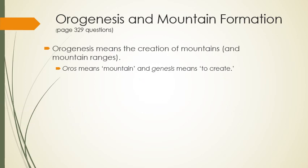So, Orogenesis and mountain formation. Orogenesis literally means mountain building. 'Oros' in Greek means mountain, and 'Genesis' — just like the book of Genesis from the Bible, the creation story — Genesis means to create. So Orogenesis literally means creating mountains: the creation of mountains, how mountains are made.